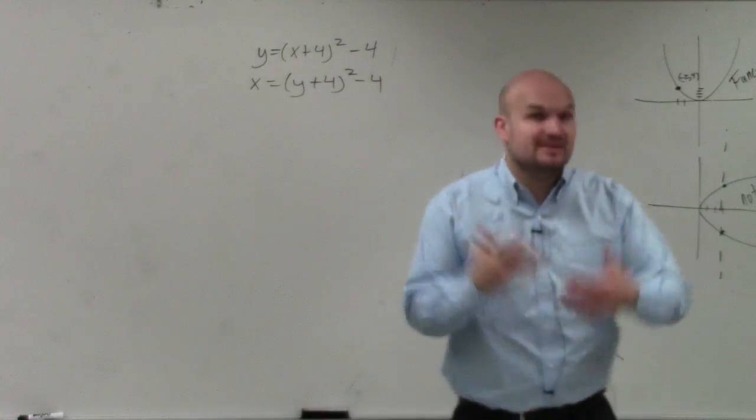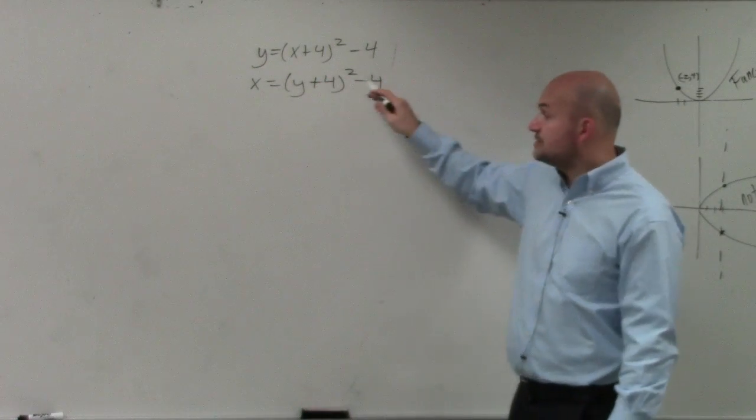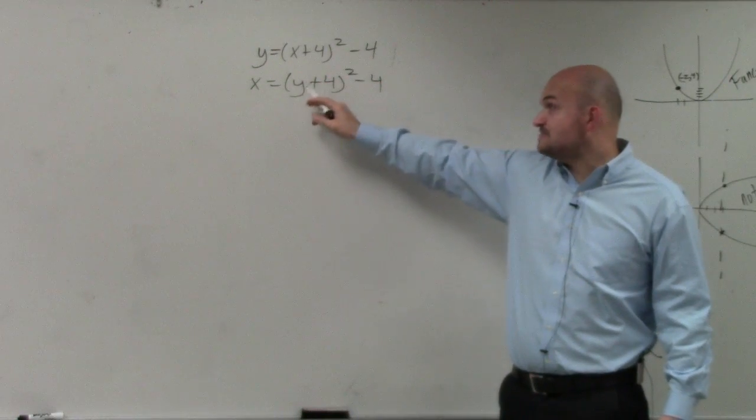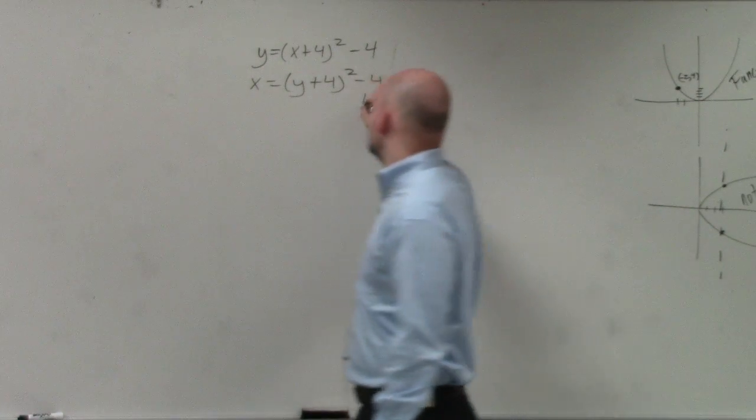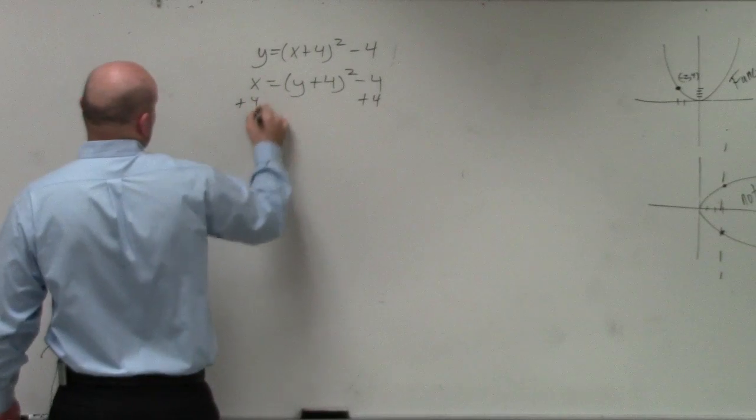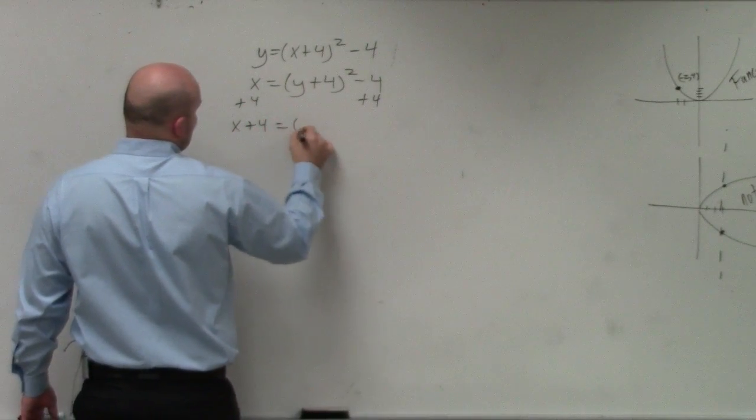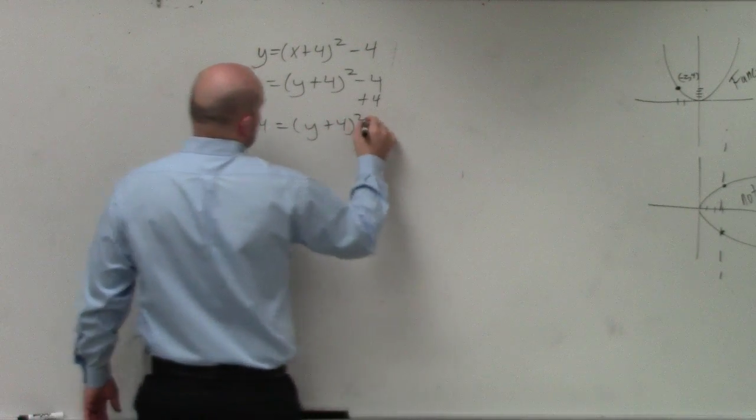Now, we just need to solve for y. So again, we need to use our inverse operations. So far, you see this y, it's being added by 4, and it's being squared, but that's all inside the parentheses. First thing I want to do is undo the adding of 4 on the outside. So I have x plus 4 equals y plus 4 squared.